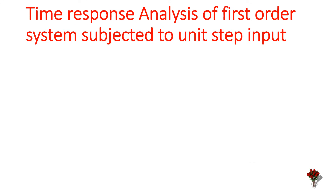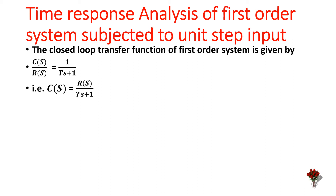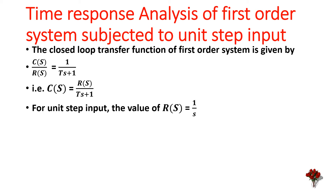Time response analysis of first order system subjected to unit step input. The closed loop transfer function is C(s)/R(s) = 1/(Ts + 1), so C(s) = R(s)/(Ts + 1). For unit step input, R(s) = 1/s. Therefore, C(s) = 1 / (s(1 + Ts)).